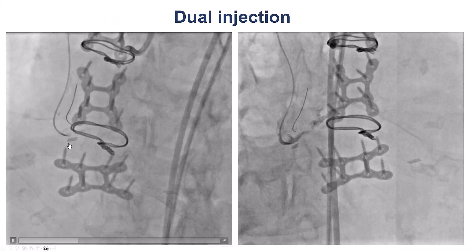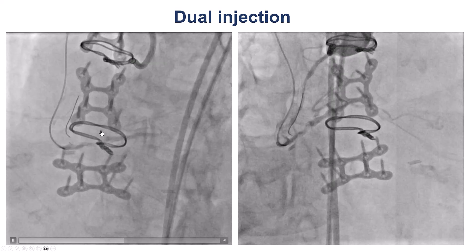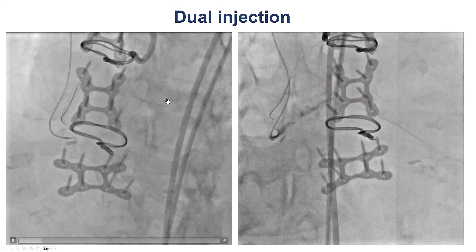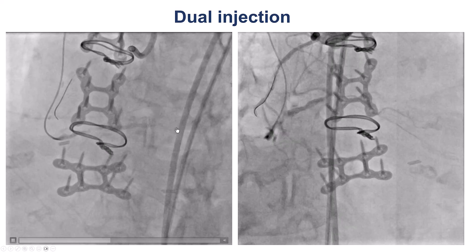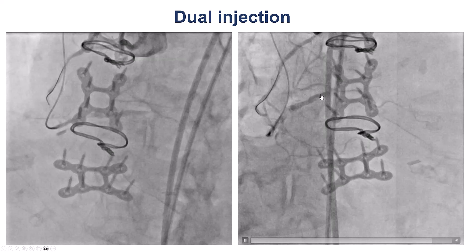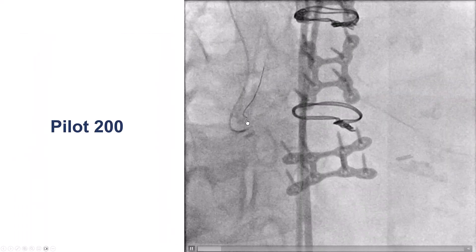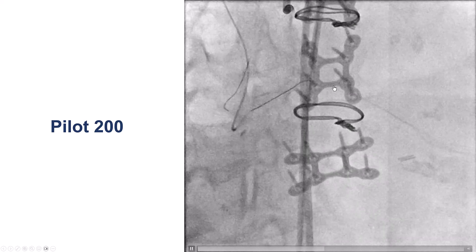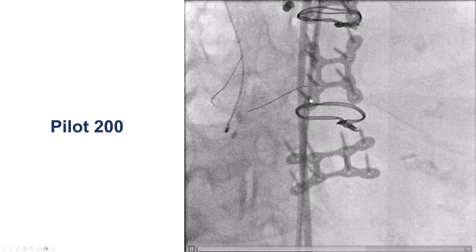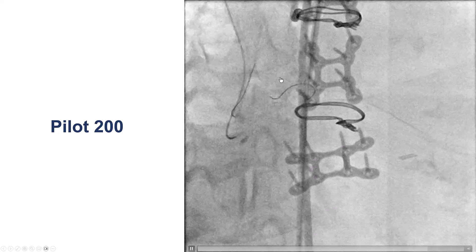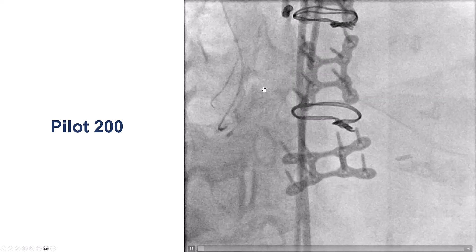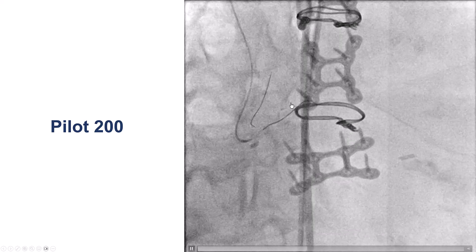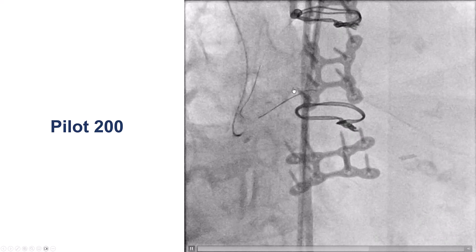We advanced the Corsair and then did an injection through the Corsair tip injection, showing the PDA and the posterolateral. There is a bifurcation on the distal cap right here. We then inserted a Pilot 200 guide wire that went through the vein graft into the native vessel, and we are now trying to go retrograde to reach the distal cap of the CTO.